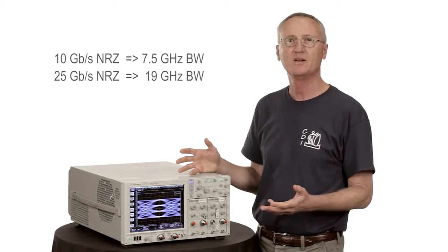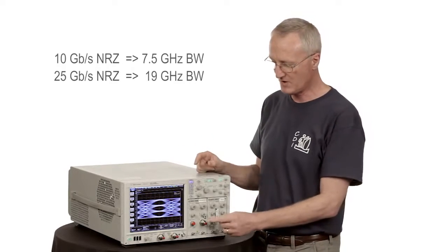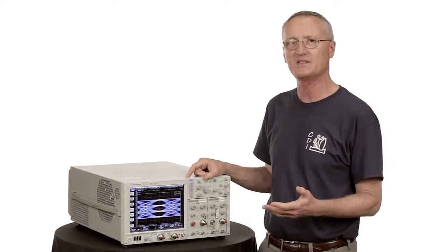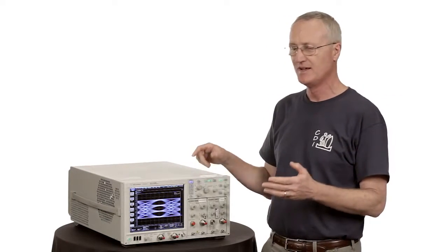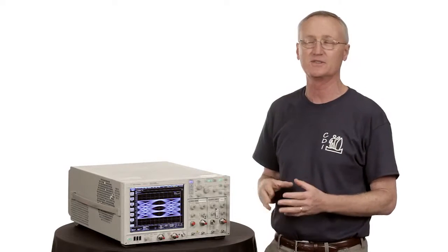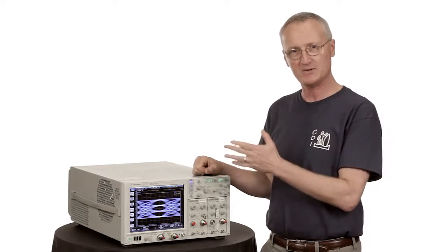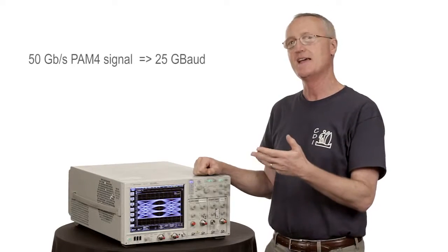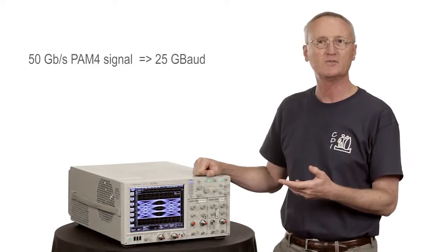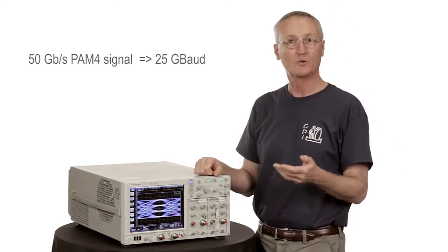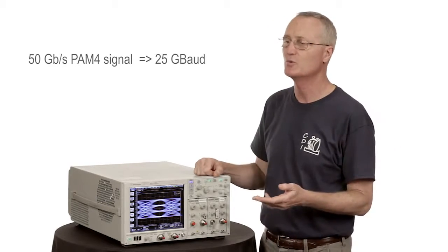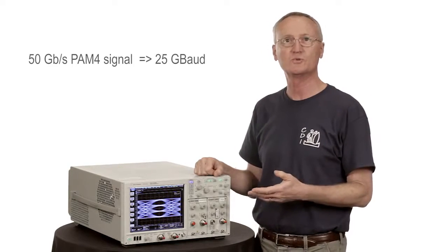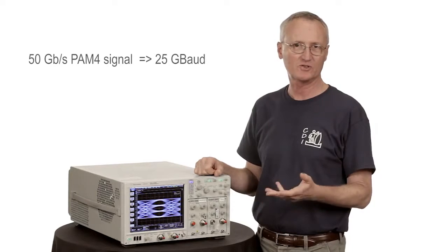What's going to happen when we go to PAM-4 in terms of optical reference receivers? Well, the standards haven't defined it yet, but what we anticipate is that just like with electrical signals, it's not the bit rate that counts, but rather the baud rate. So a 50 gig NRZ optical signal would have a baud rate of 25 gig. The reference receiver for that we'd expect would be roughly 75% of that baud rate, which would be 19 gigahertz.